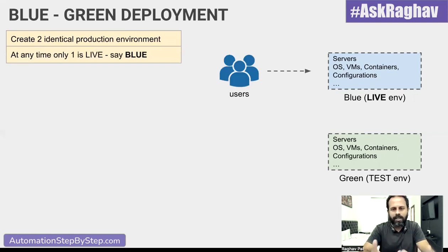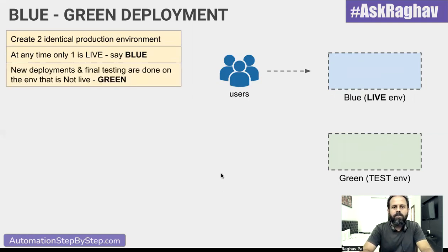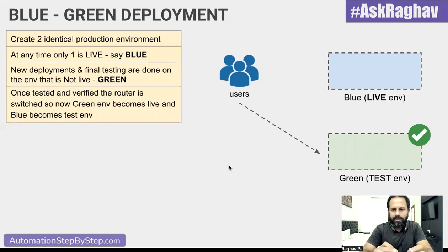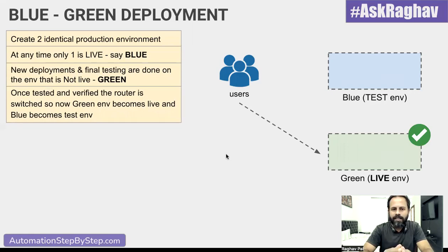The blue environment is our live environment where users are using the application. Whenever we have to do a deployment, we will do it on the other environment — the test environment. So we deploy on the green environment, and after final testing when everything is okay, we switch the users to the green environment. Now the green environment becomes the live environment and the blue environment becomes the test environment.